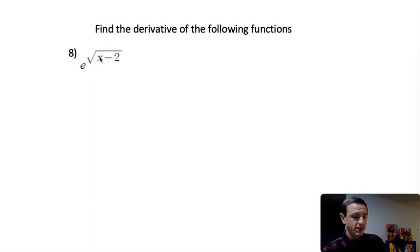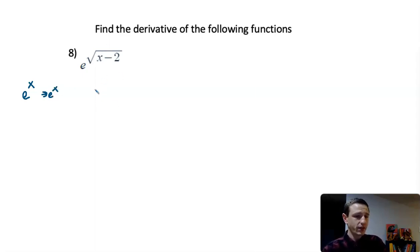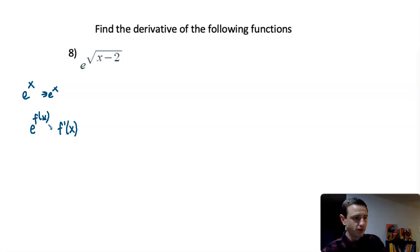In this example we have e to the square root of x minus 2. We know the derivative of e to the x is just e to the x, but when we have a function that's not just x, we have to use the chain rule. So we're going to have e to the f(x) times the derivative of that f(x) function.